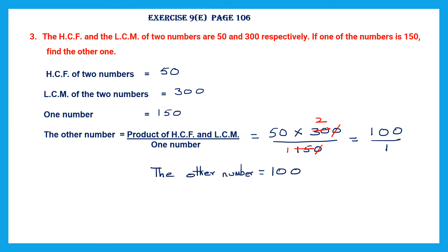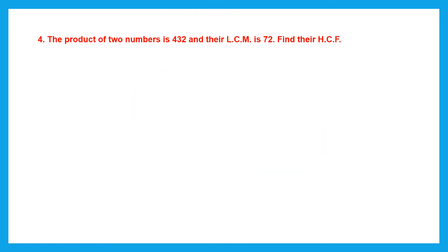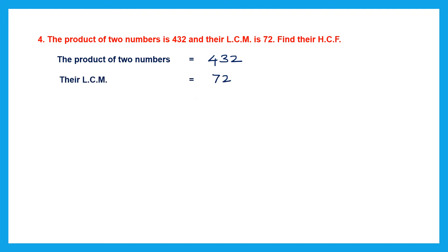So we have found the answer. They asked us to find the other number, and the other number is 100. Question 4: The product of two numbers is given to us, and the LCM is given to us. We are asked to find the HCF. The product of the two numbers is 432, and the LCM is 72.